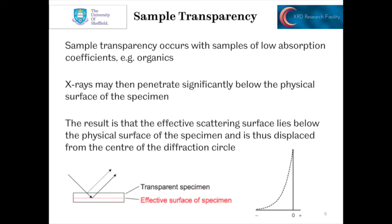Sample transparency occurs with samples where they've got a low absorption coefficient, particularly with X-ray diffraction. If the samples are organics or have lots of light elements, then this may be a problem. The X-rays, because the sample is not absorbing so heavily, can penetrate significantly below the actual physical surface of the specimen. The result is that the scattering surface effectively lies below the physical surface, and you can see that drawn in the schematic at the bottom.